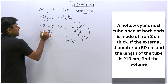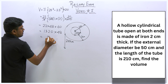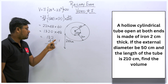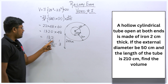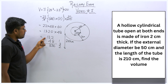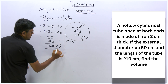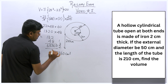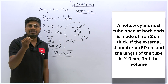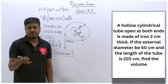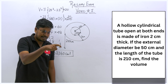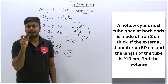Simplify: cancel 7 with 210 to get 30. So Volume = 22 × 96 × 30. 22 × 96 = 2112, then 2112 × 30 = 63360. The volume of the hollow cylinder is 63360 cm³. This question covered the case where thickness is given instead of internal radius, which is another common model in exams.